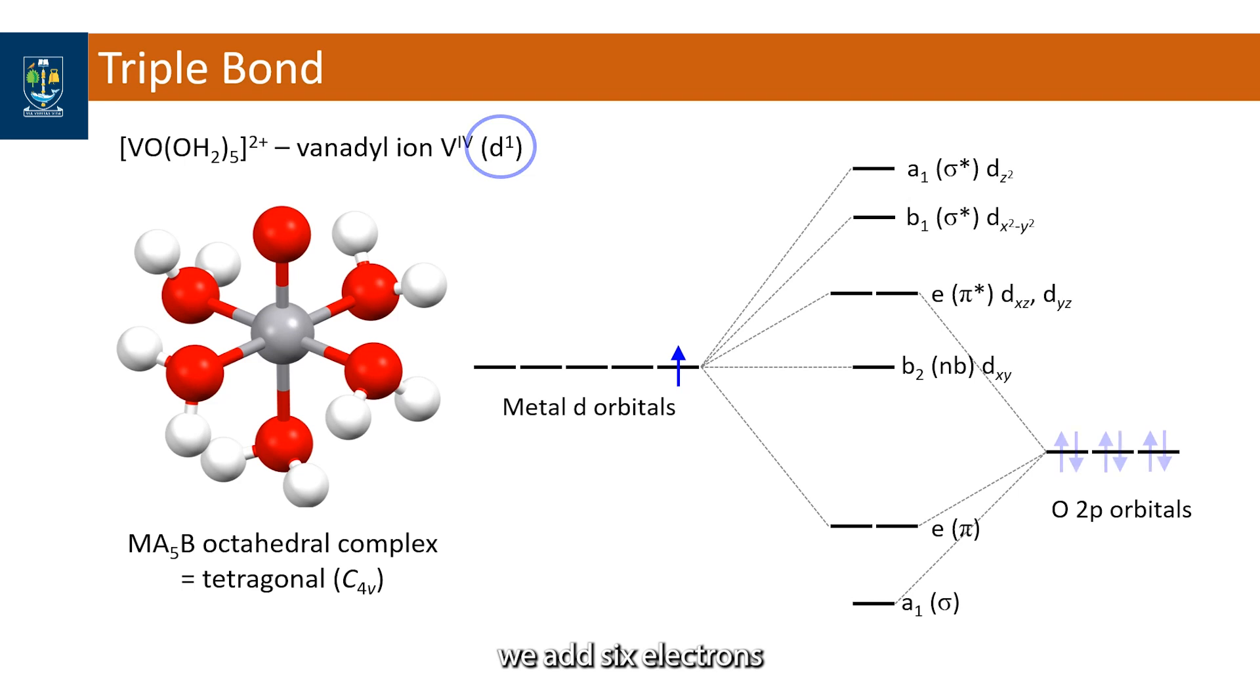To the right side we add six electrons as the number of 2p electrons in the oxide ion which has a full outer shell as shown in the Lewis structure. Following the Aufbau, Pauli and Hund principles these electrons are added to the scheme starting at the bottom.